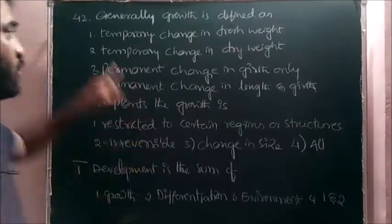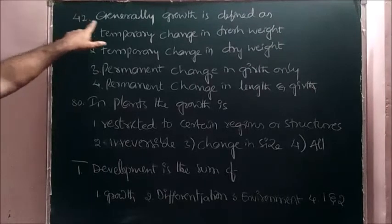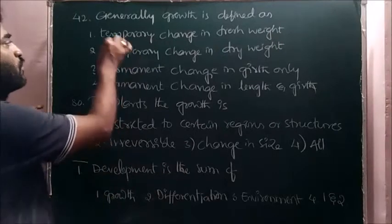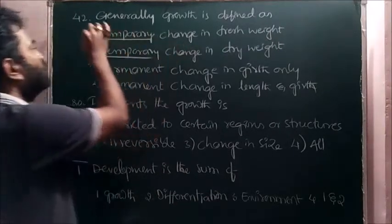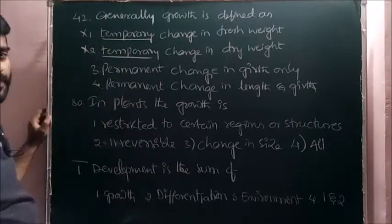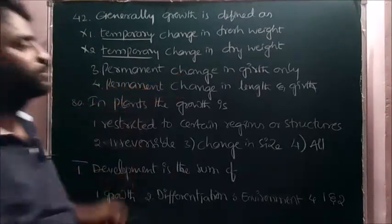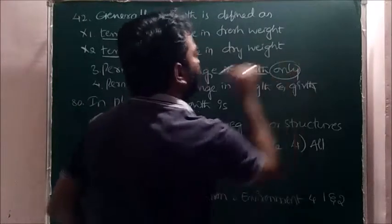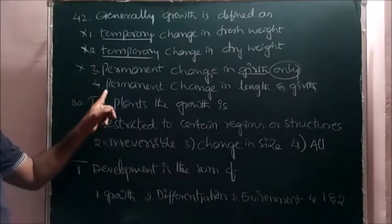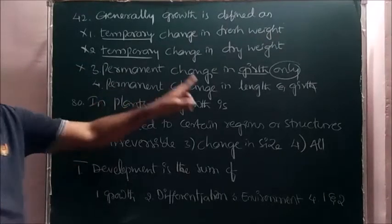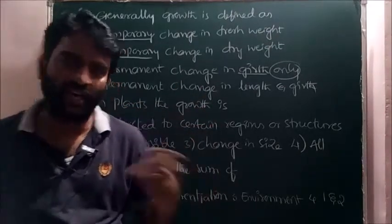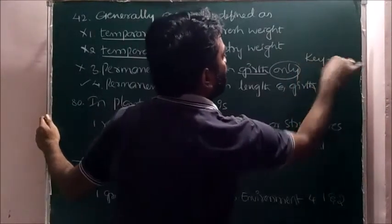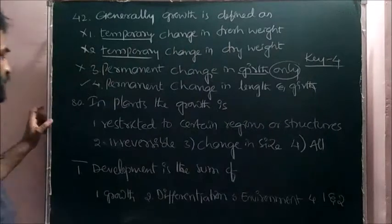Next question number 42 from our material: generally growth is defined as temporary change in fresh weight. Growth is not temporary change in mass, hence first option and second option are wrong. Permanent change in girth only, girth means the diameter of the stem. If increased only is given, hence third option also wrong. Fourth one, permanent change in length, girth, volume, surface area, everything is correct. Hence fourth option is correct for this question.